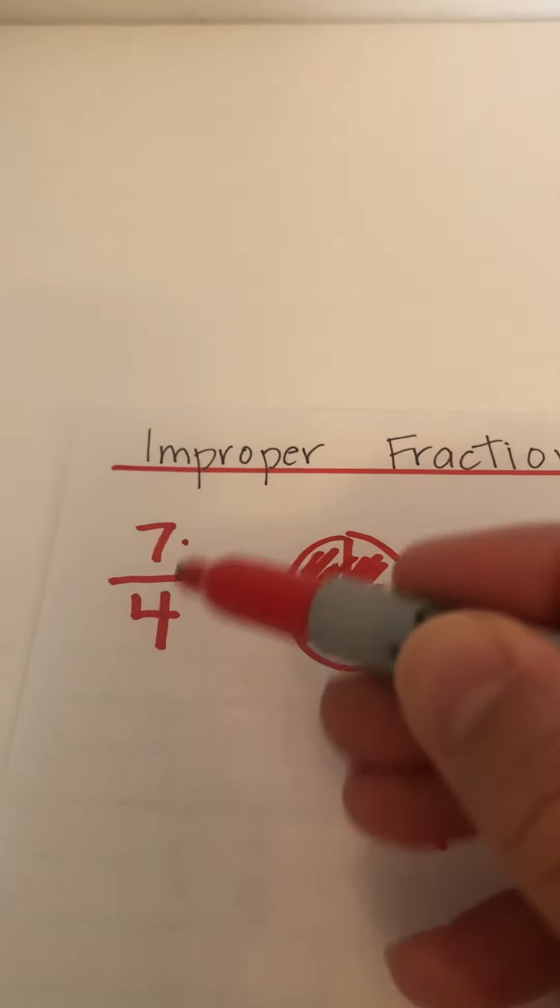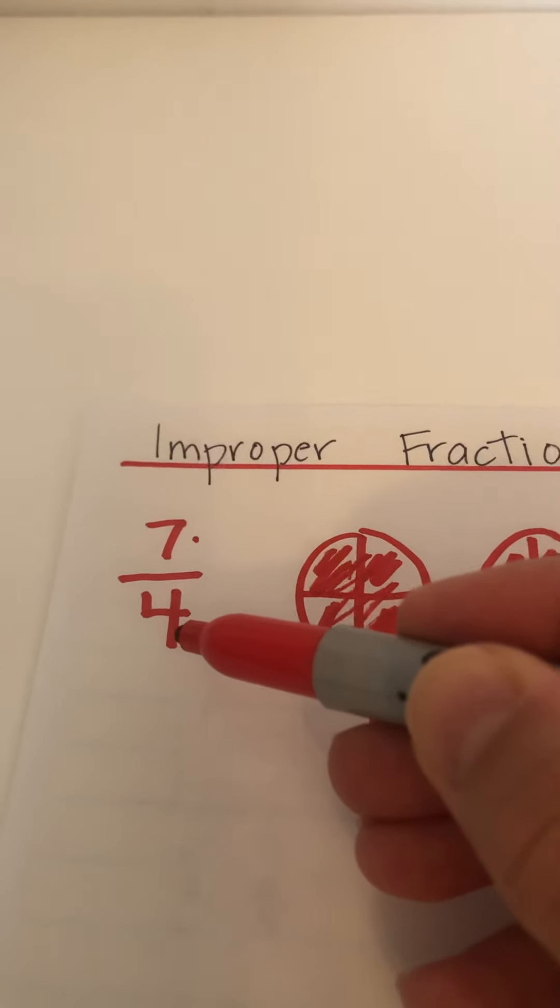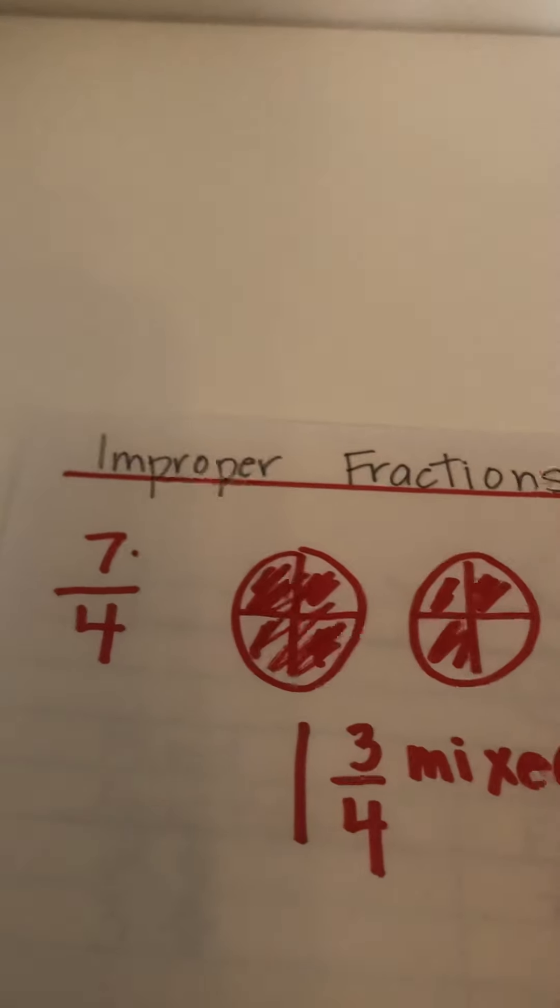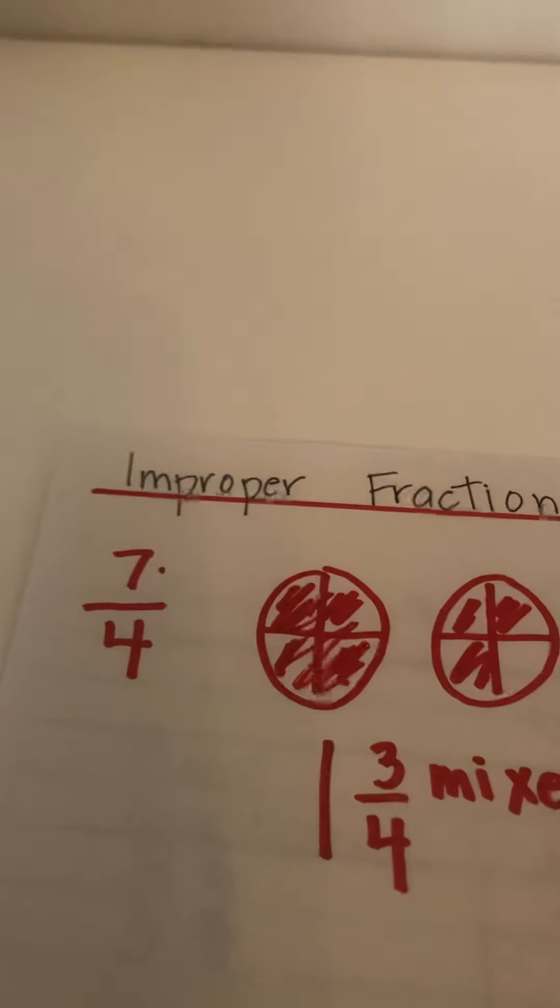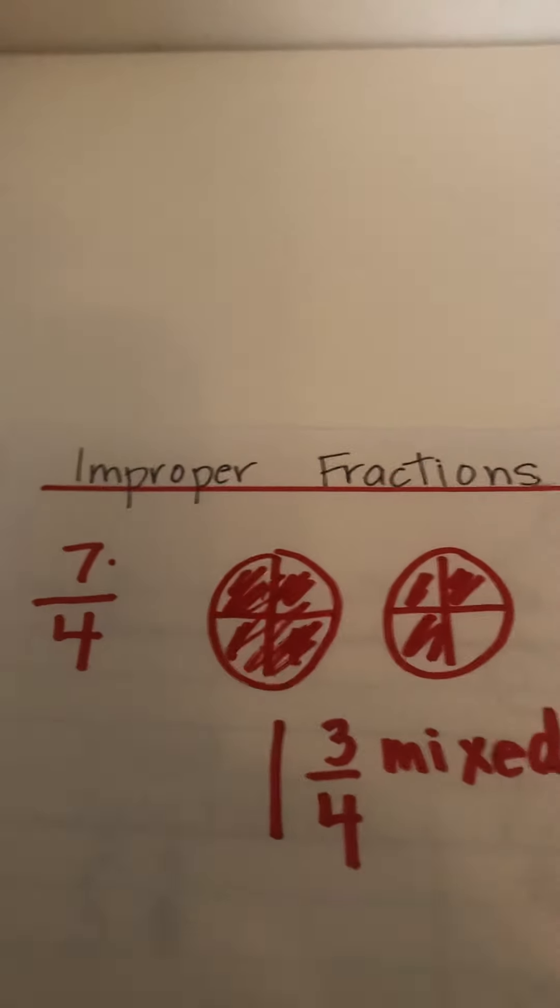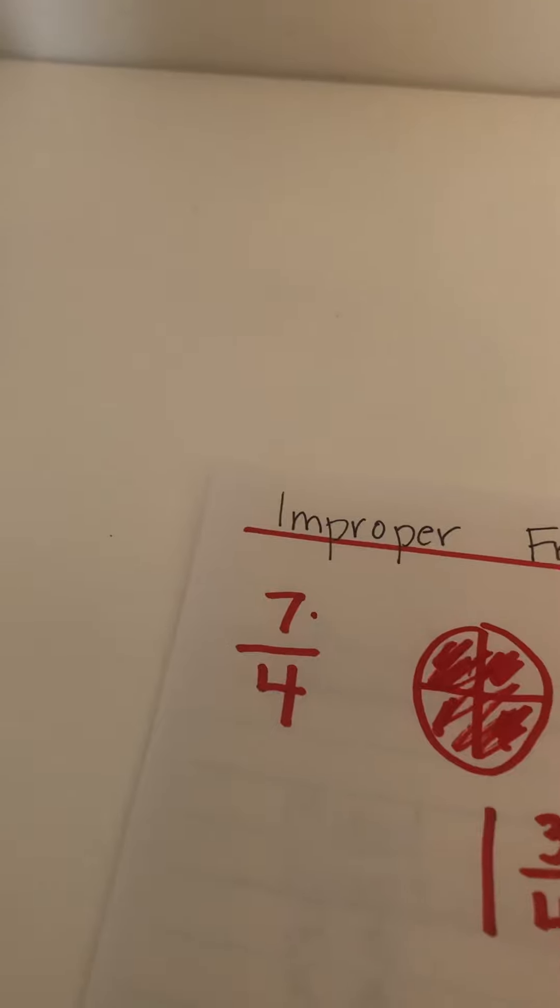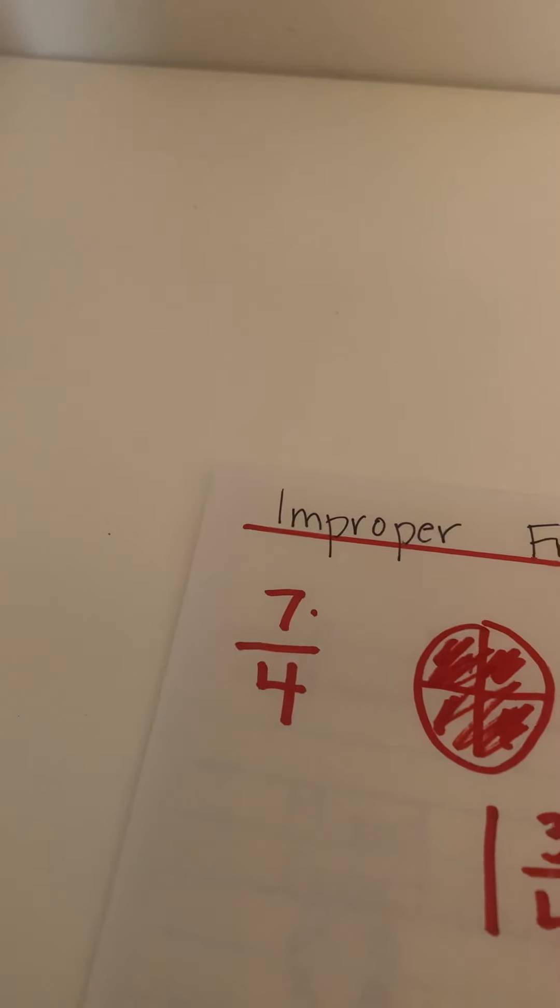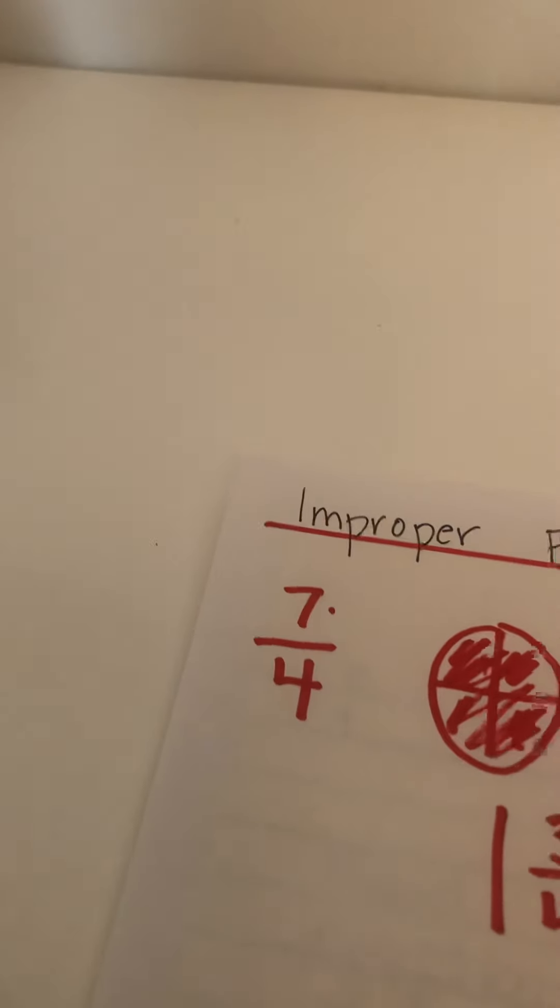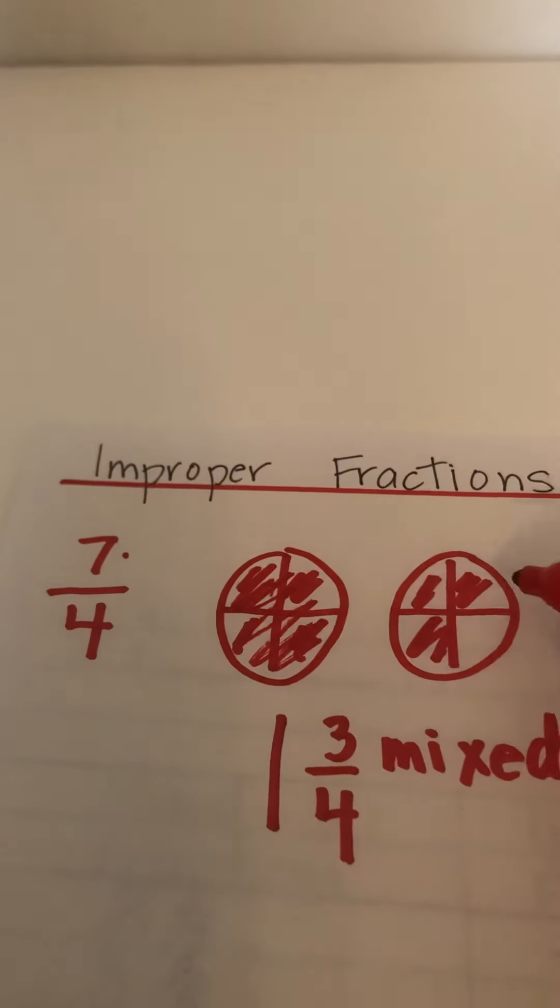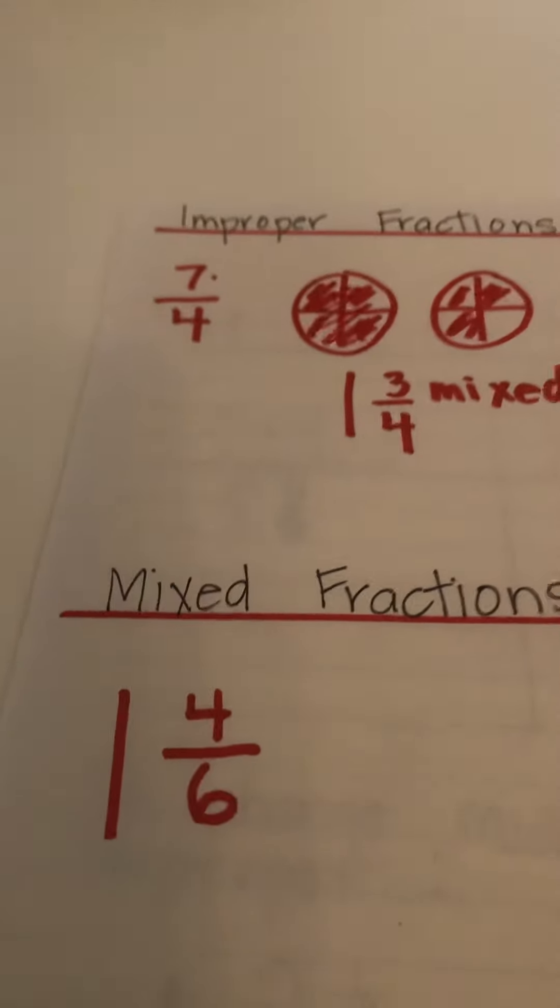Now if you wanted a mathematical way to figure this out, you would go on your calculator, do seven divided by four, and you would get one decimal. The one would be for the one whole, and it's probably going to be about seven five because that's 75%. So that's how you would figure this out.